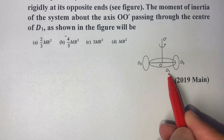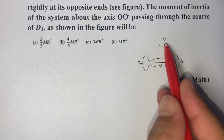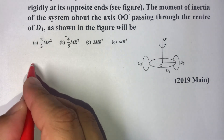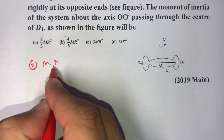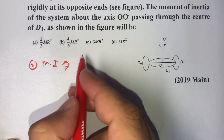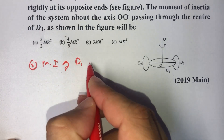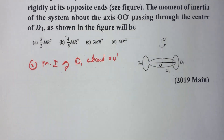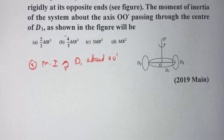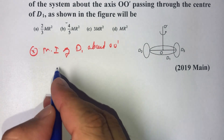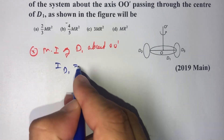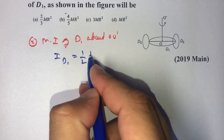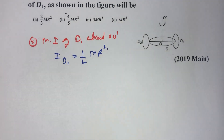Let us first consider the moment of inertia of D1 about axis OO'. This is given as I_D1, which equals half m r squared — that is, ½mr².